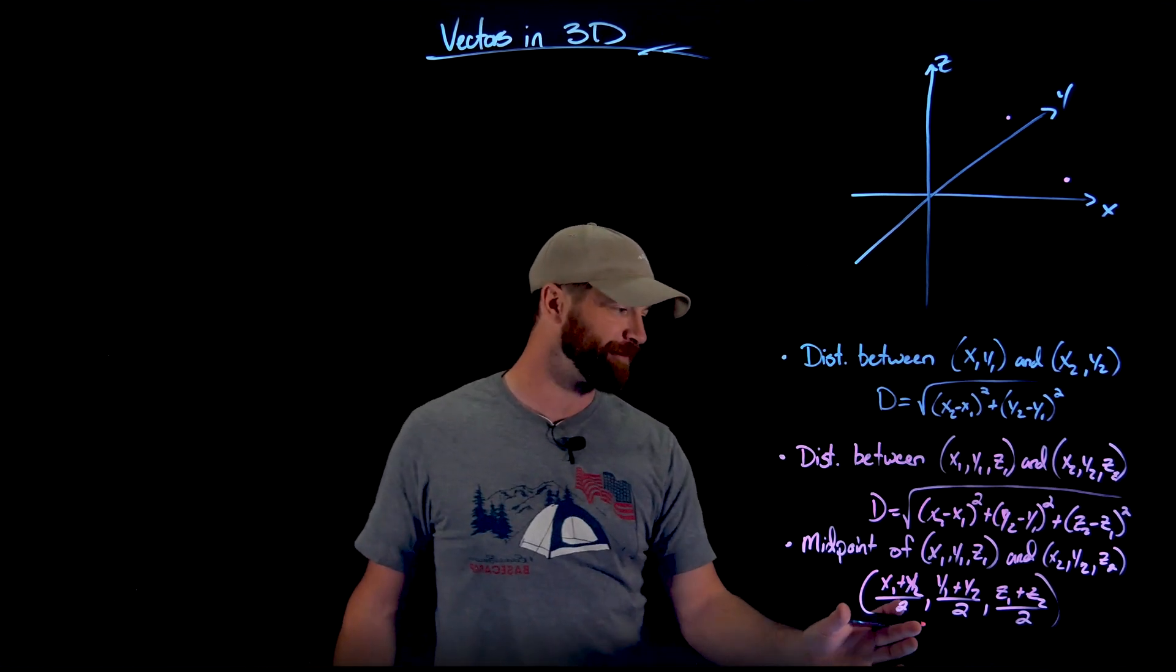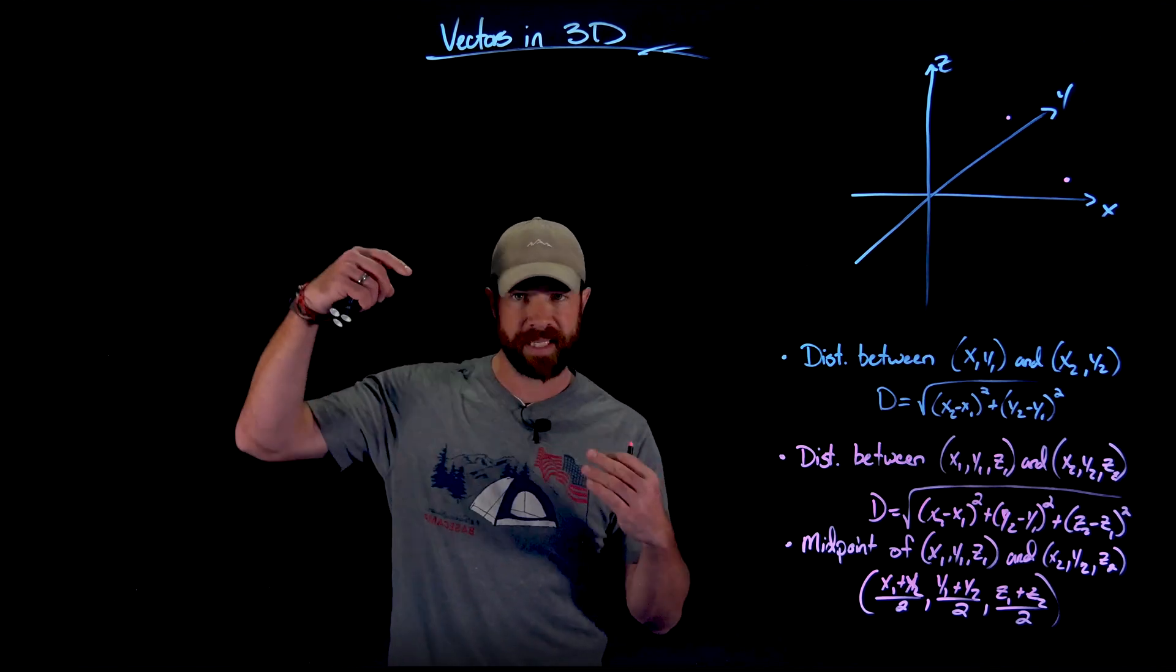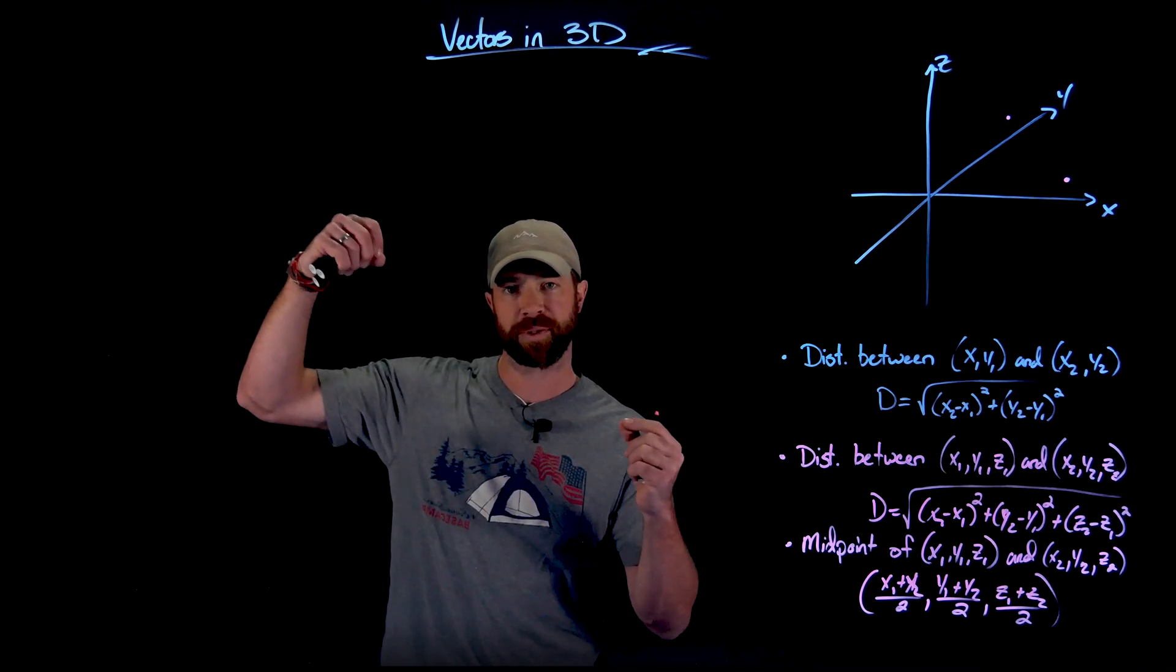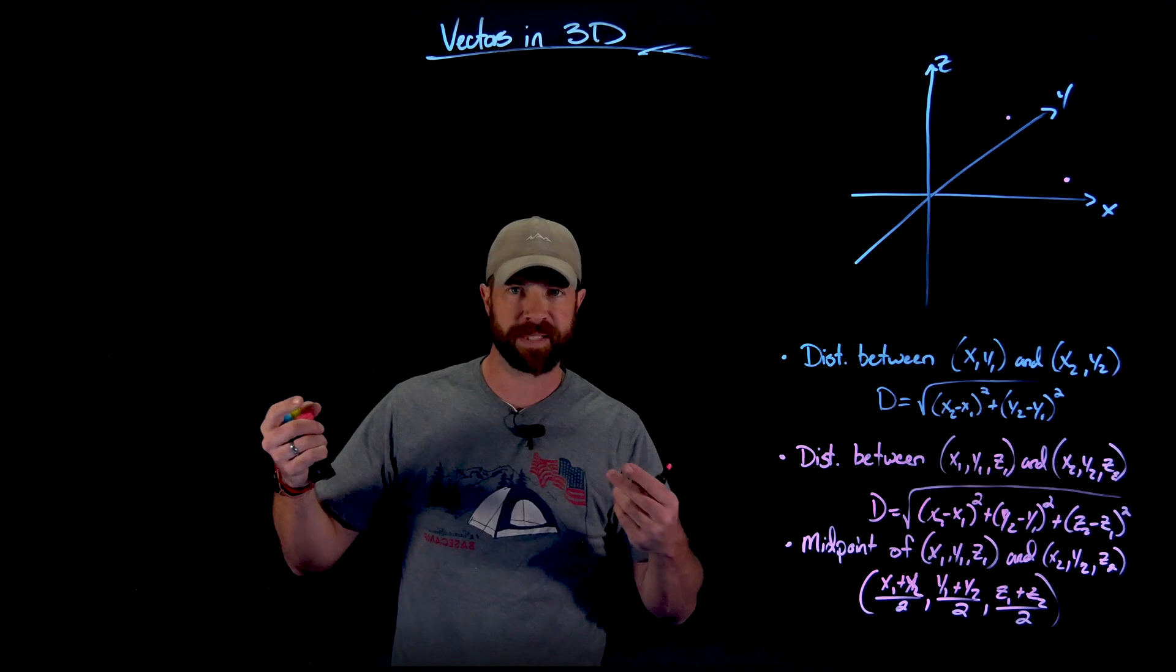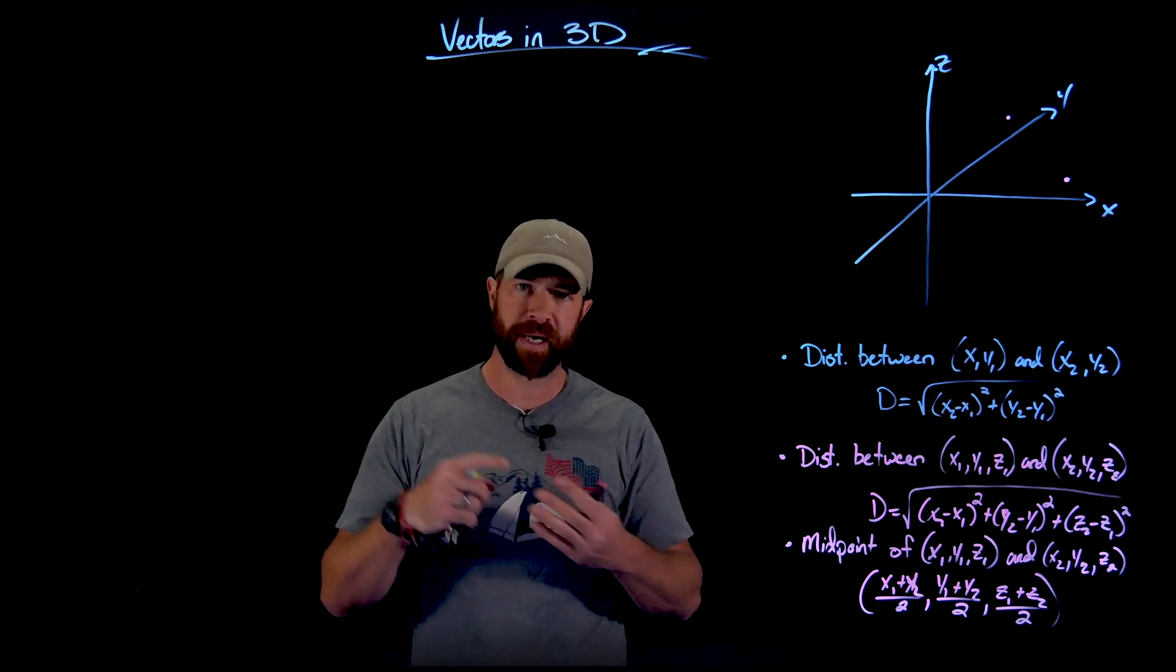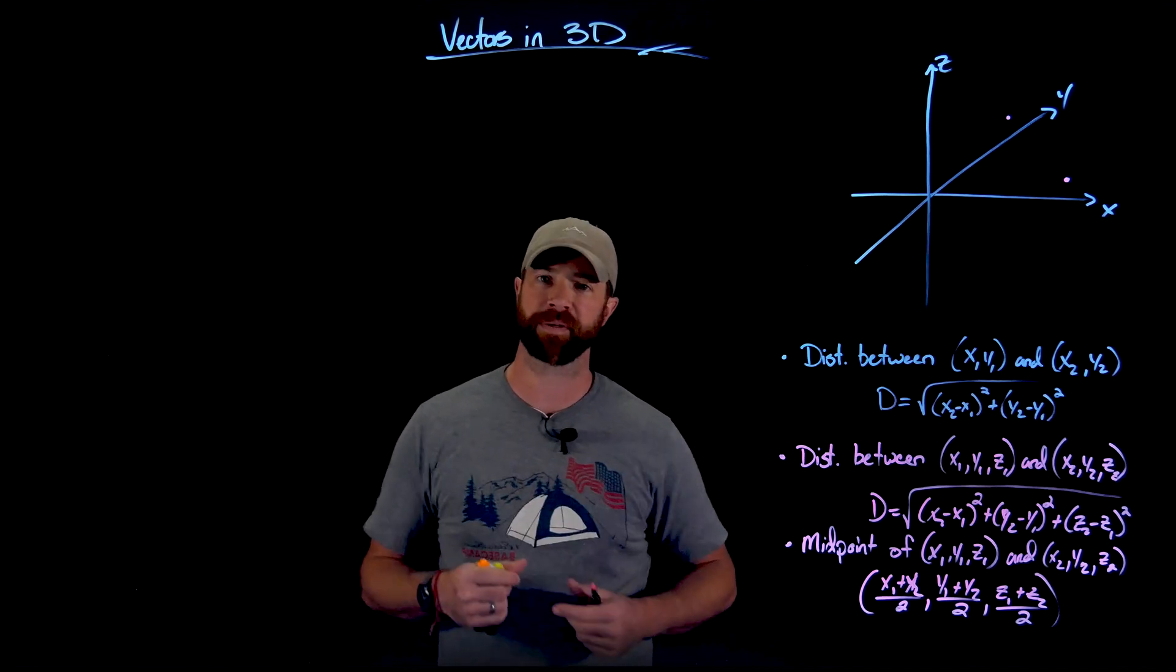Again, the way to think about this is to find the midpoint, that point directly in line with that direct line distance between those two points, it's just take the X values, find the average. Take the Y values, find the average, and the Z values, and find the average.